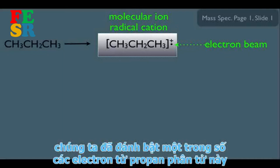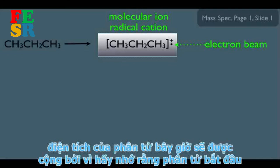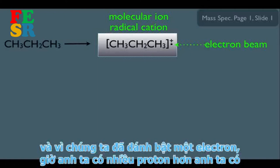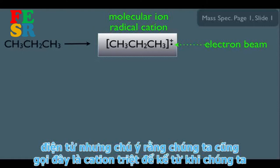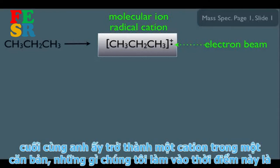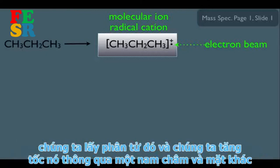If we dislodge one electron from propane, the overall charge becomes positive, because the molecule started neutral — equal protons and electrons — and now has one more proton than electrons. We also call this a radical cation: since one electron was dislodged, there's one unpaired electron, making it both a cation and a radical.